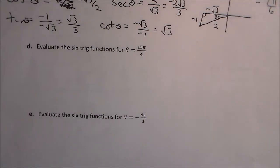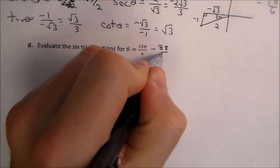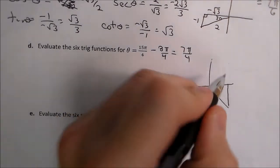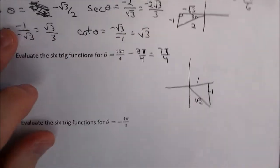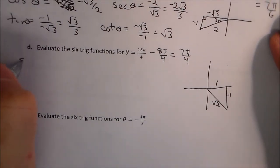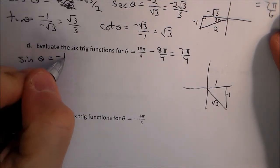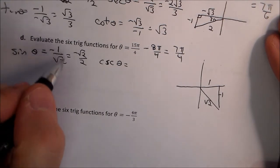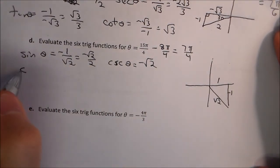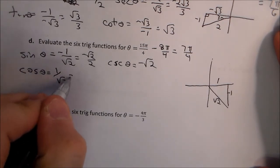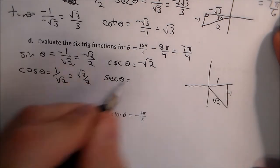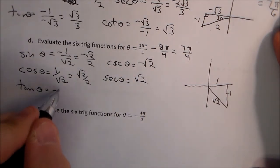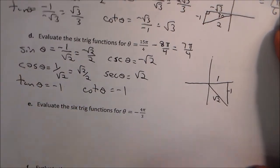For 15π over 4, subtract 8π over 4 to get the coterminal angle 7π over 4, which is in quadrant four. The sides are 1, 1, and root 2, with the y-value negative. Sine of theta is negative 1 over root 2, or negative root 2 over 2. Cosecant is its reciprocal, negative root 2. Cosine is 1 over root 2, or positive root 2 over 2. Secant is root 2. Tangent is negative 1, and cotangent is also negative 1.